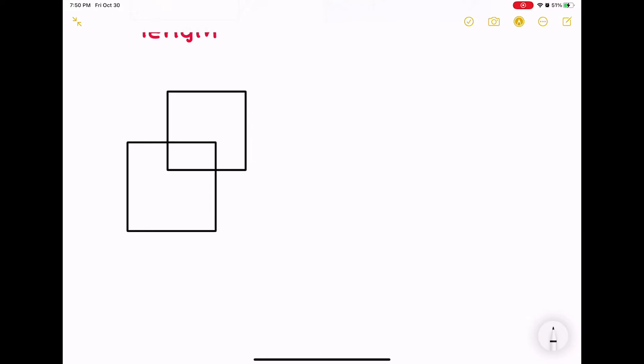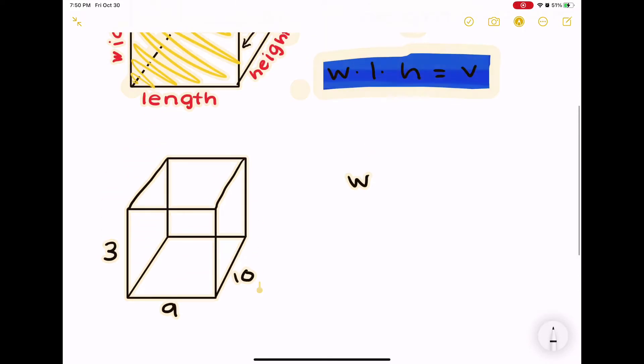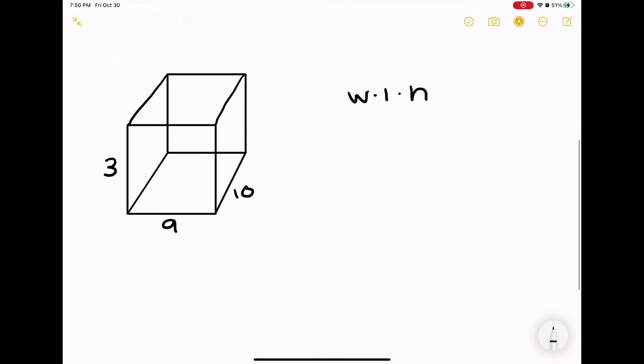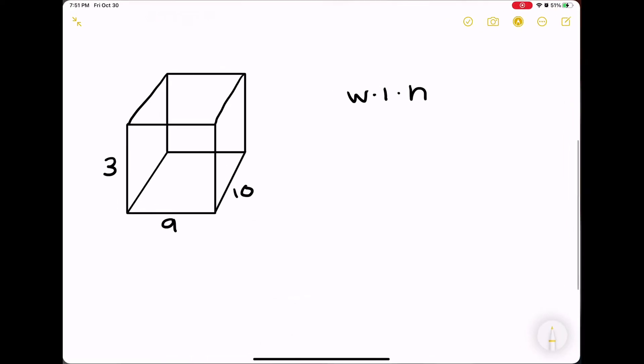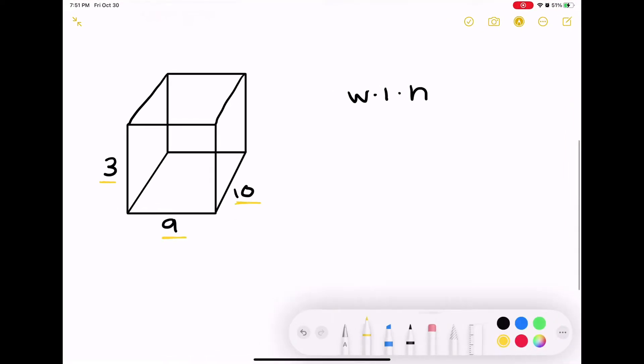Let's say we have a rectangular prism - it's 3, 9, and 10. In this case, the height is 10. We know the equation is width times length times height. If we plug in all of it, it will be 3 × 9 × 10, and that will be 27 × 10 which is 270.